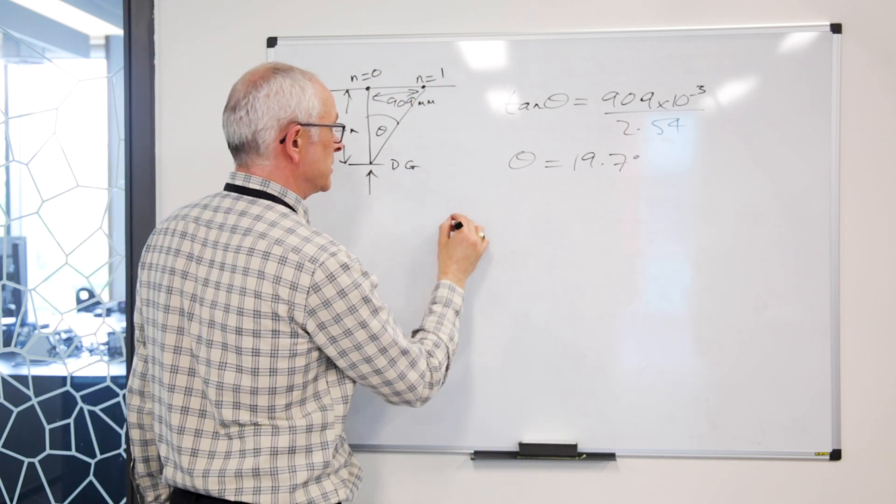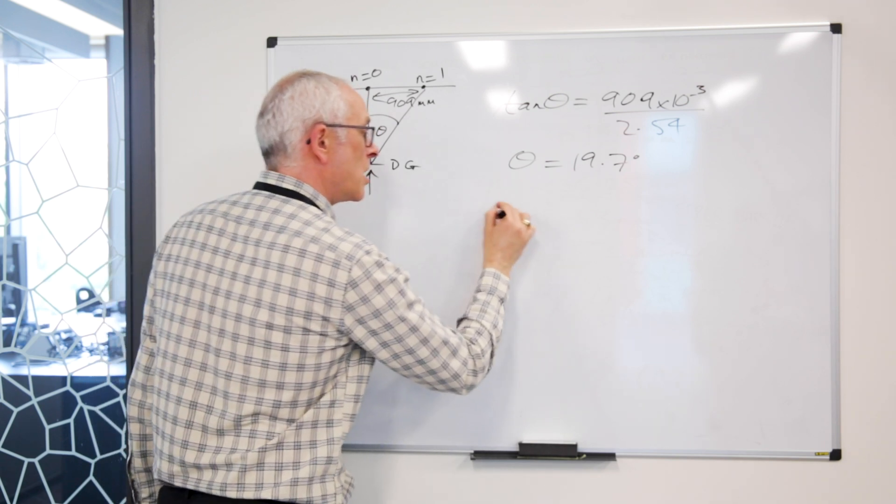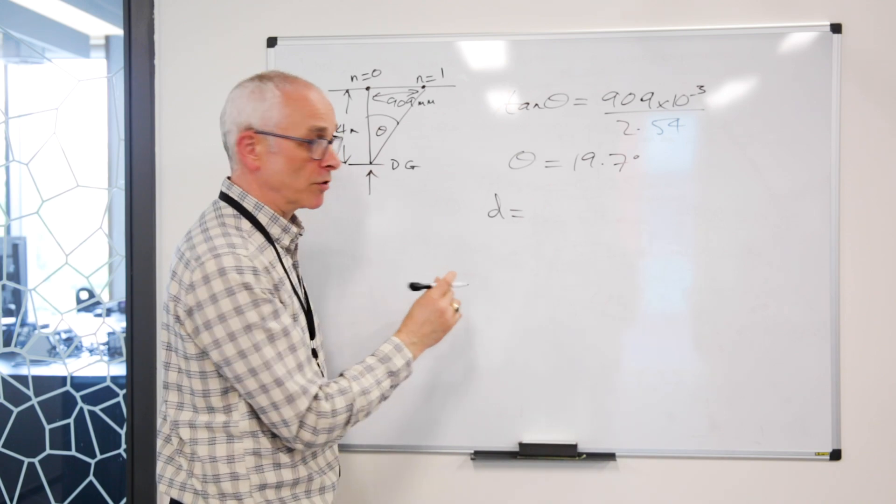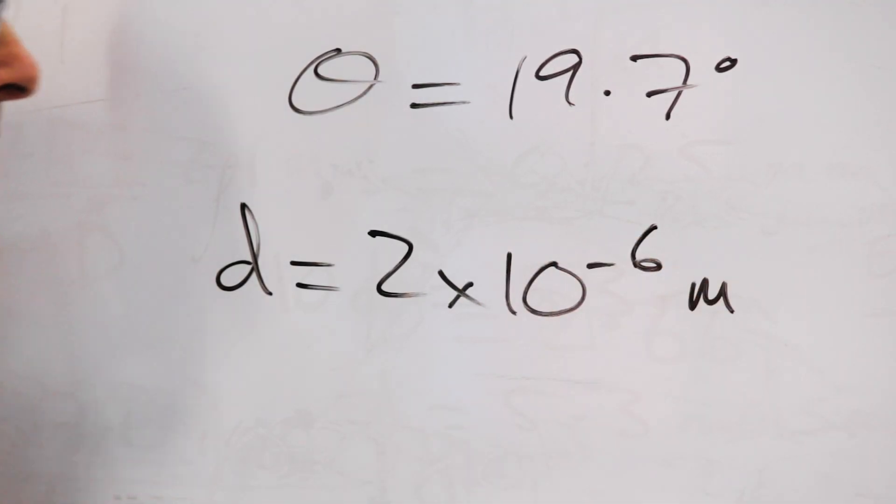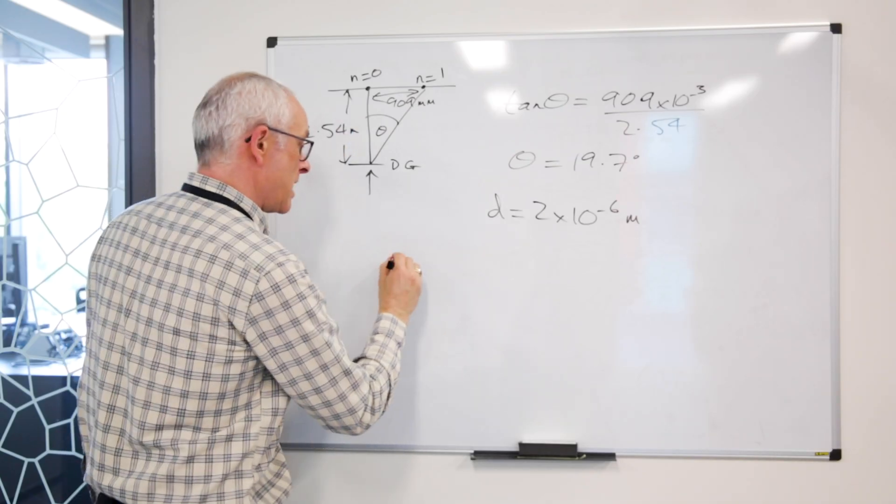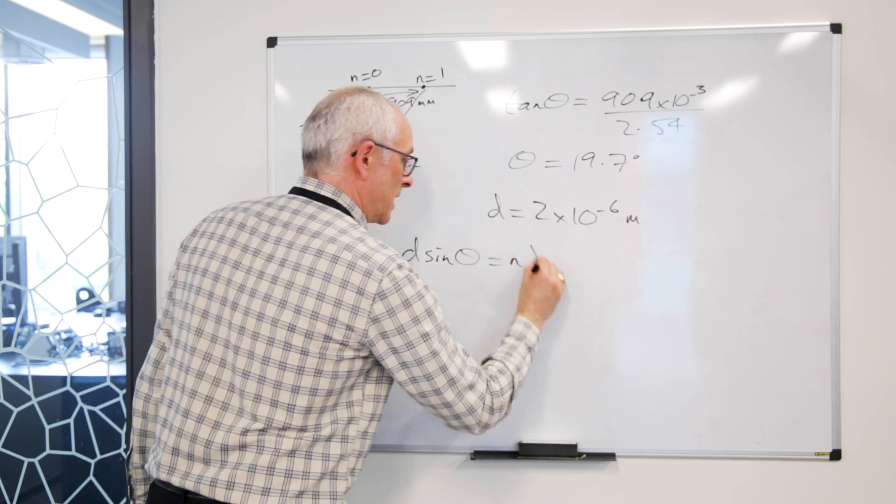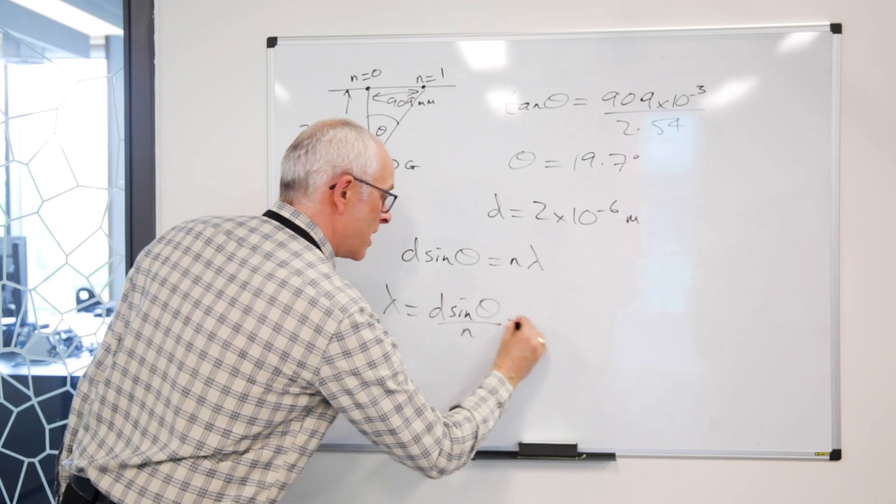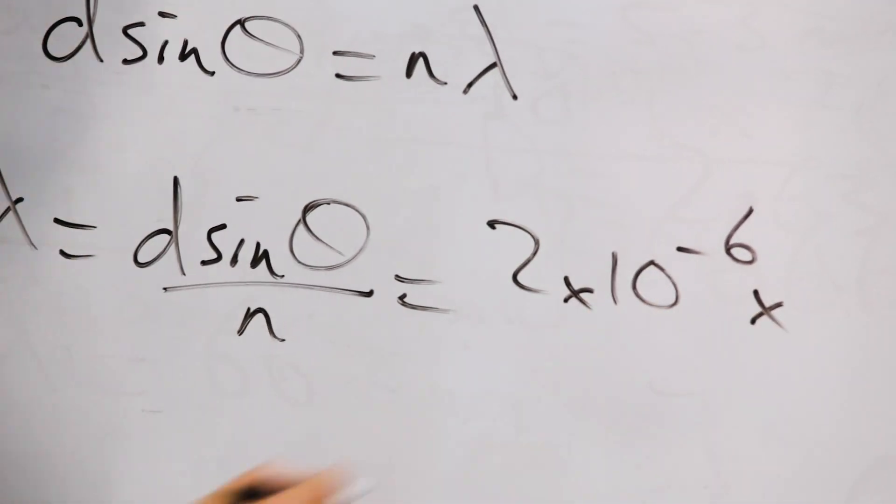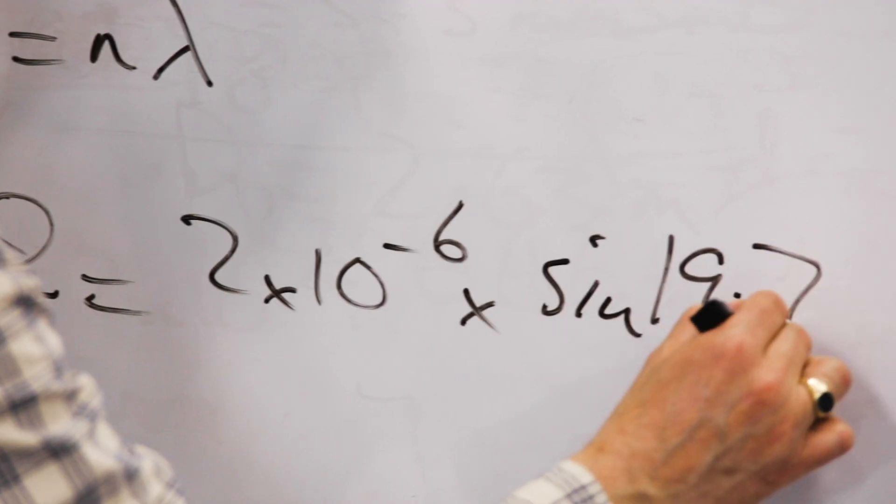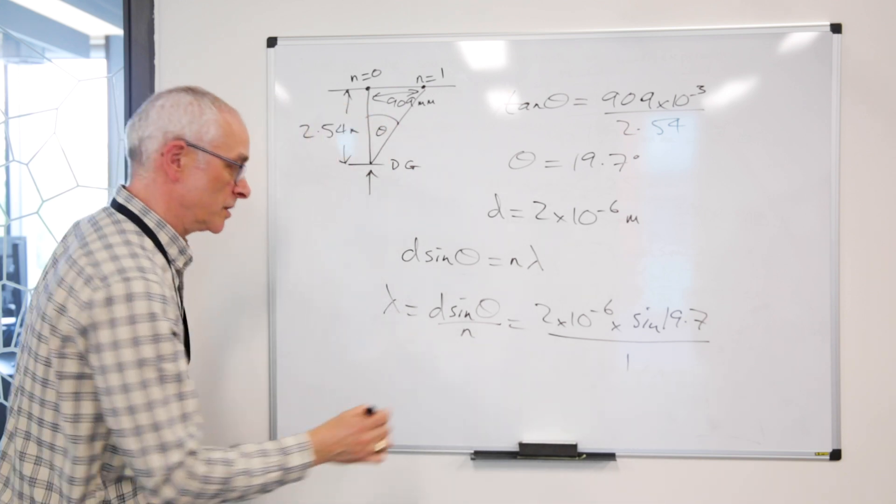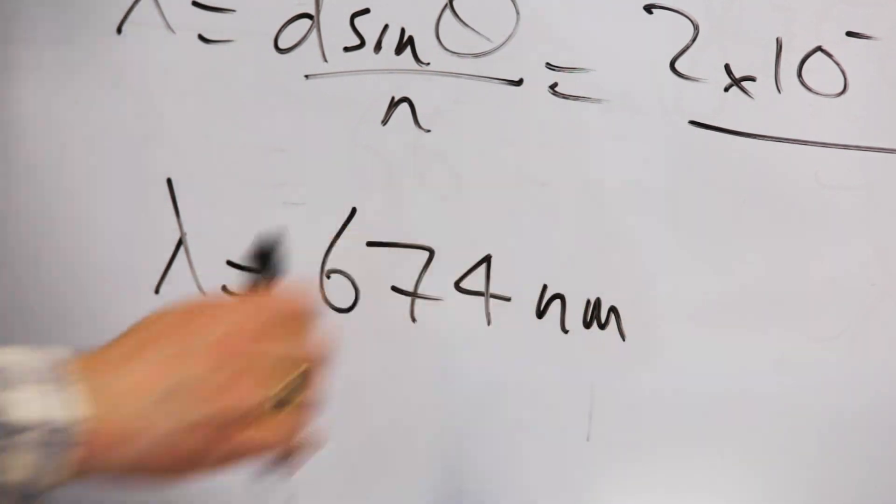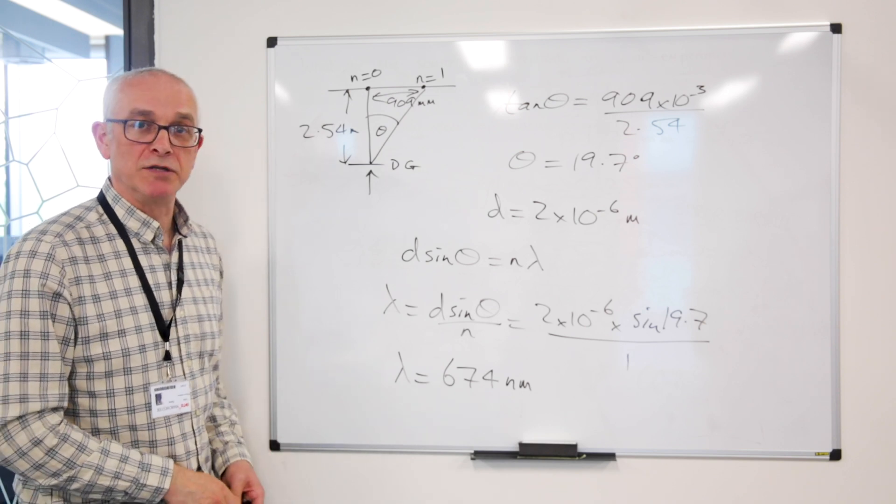We can then put that into the diffraction grating equation. Firstly we need to know d which is the distance between adjacent slits on the grating, which is 2 times 10 to the minus 6 meters. So then we have d sin theta equals n lambda. So lambda equals d sin theta over n, which is 2 times 10 to the minus 6 times by the sine of 19.7, divide that by n which was 1 because it was the first order. That gives us the wavelength of 674 nanometers, which is within 6 nanometers of the actual wavelength.